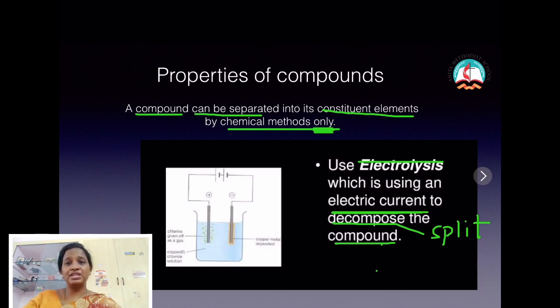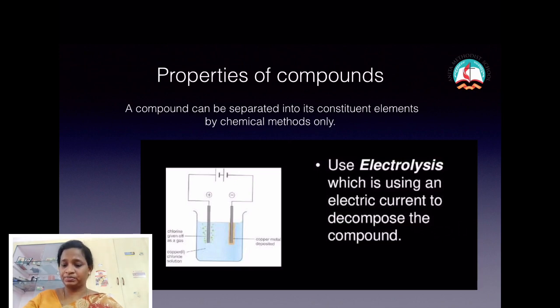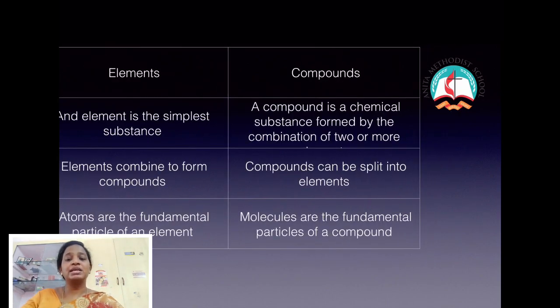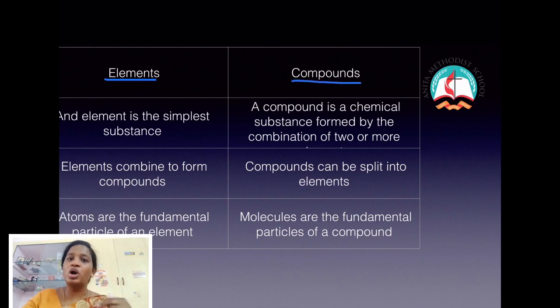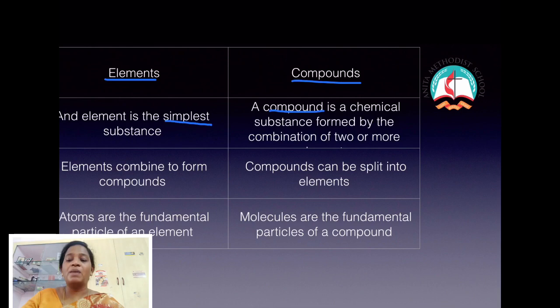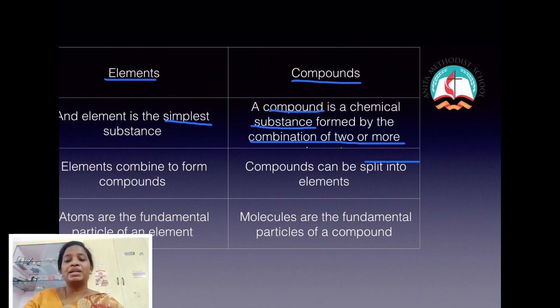Let's see some differences between elements and compounds. Elements are the simplest substances, but a compound is a chemical substance formed by the combination of two or more atoms. Elements combine to form compounds; compounds can be split into elements. Atoms are the fundamental particles of an element, while molecules are the fundamental particles of a compound.